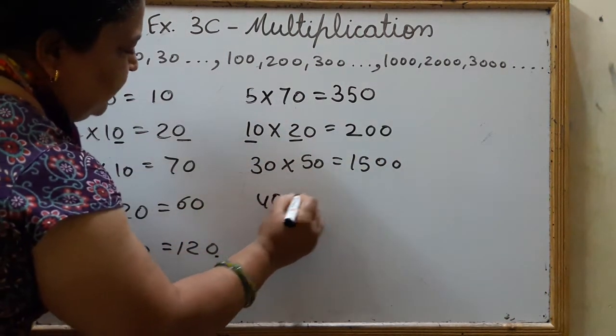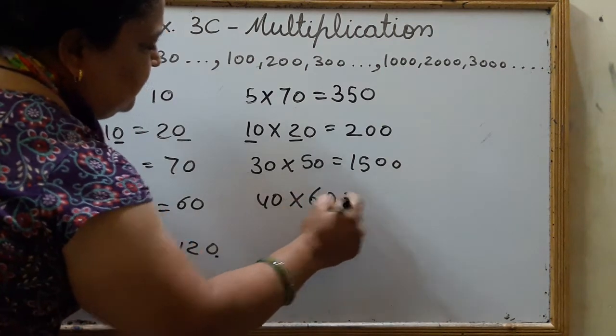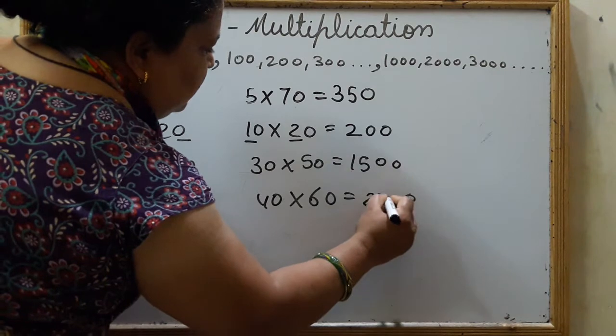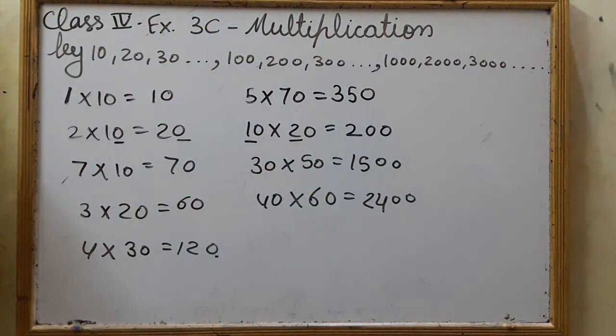40 into 60. 2 zeros and 4 6s are 24. Isn't it very easy?